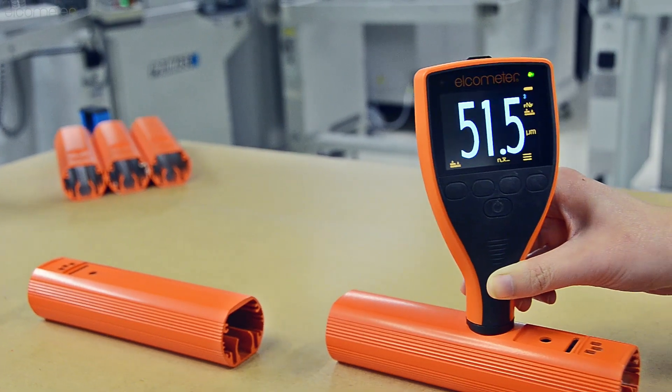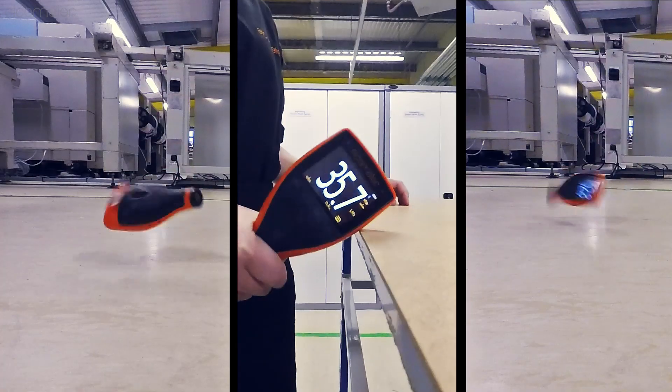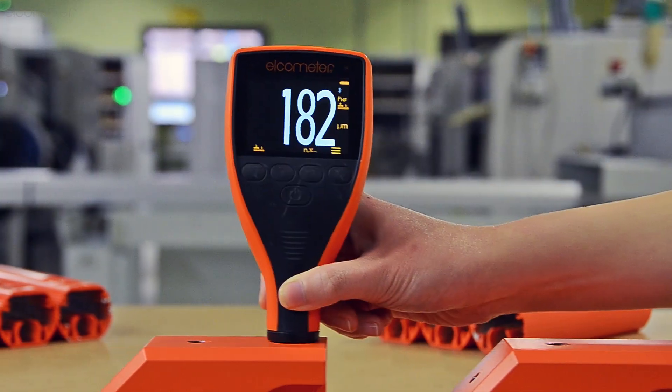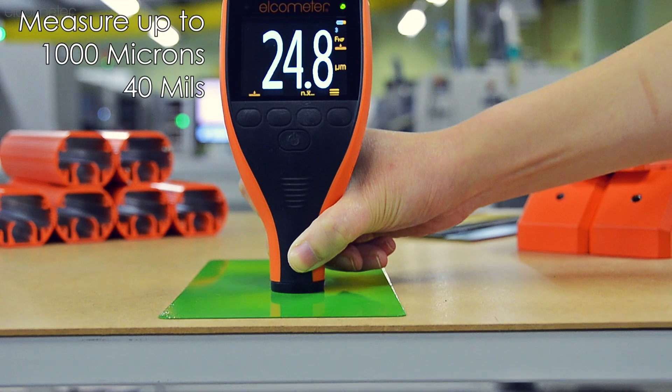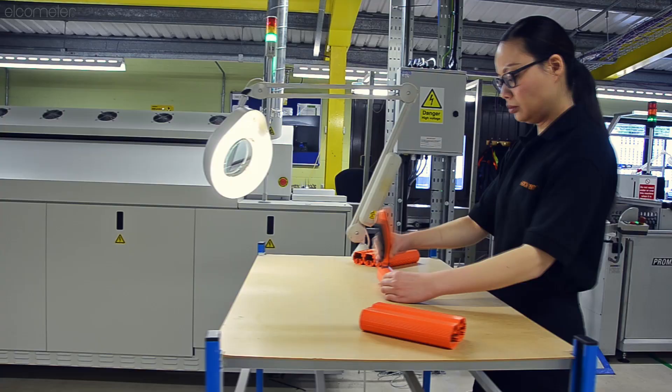Ergonomic, easy to use and rugged, the Elcometer 415 accurately and reliably measures up to one millimeter of paint on smooth non-blasted metal substrates.